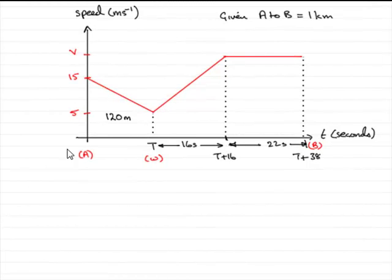Now this last part of the question, we're given that the distance from A to B is 1km and asked to find V. So how are we going to do this one?